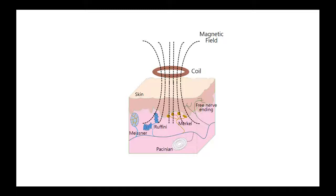On the contrary, the method proposed in this study applies current to an electric coil that is separated at a certain distance to generate a time-varying magnetic field. This magnetic field induces current flow inside the body and elicits a tactile sensation by activating nerve cells or mechanoreceptors of the skin.